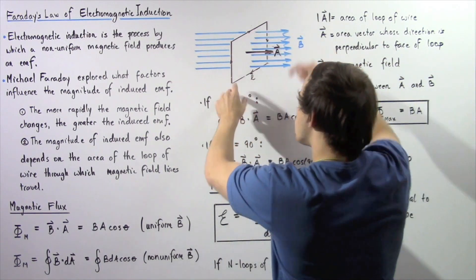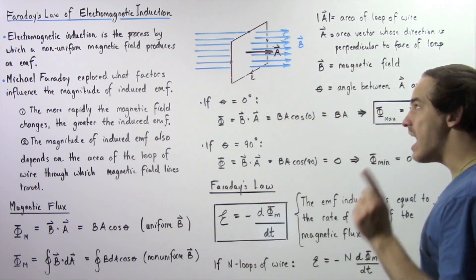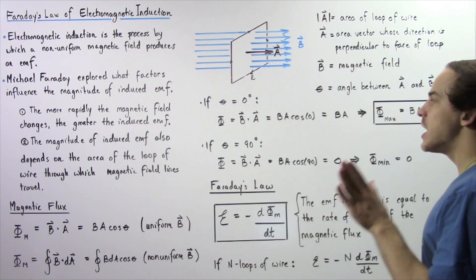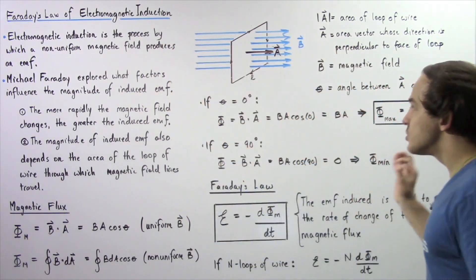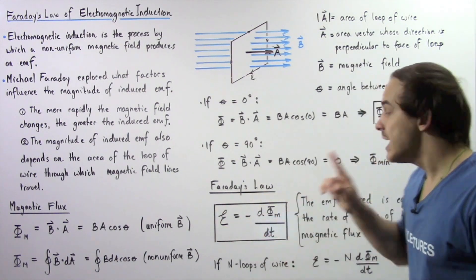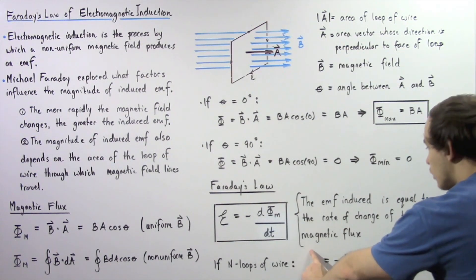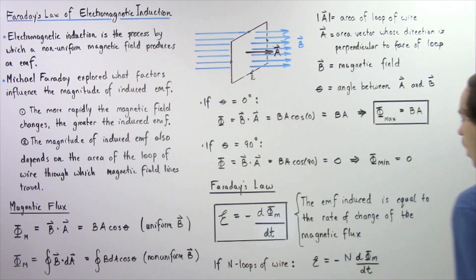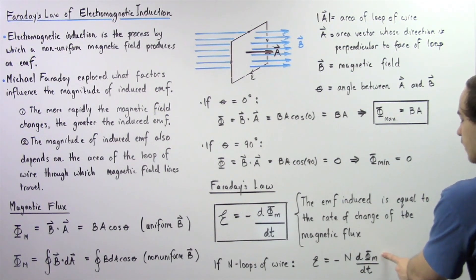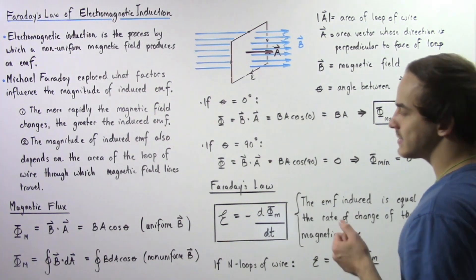Notice that so far we are dealing with only one loop of wire. If we take N loops of wire that all have the same exact area and stack them on top of one another, Faraday's Law becomes the following: the induced EMF is equal to the negative of the product of N — the number of loops of wire — multiplied by the rate of change of magnetic flux, given by d(magnetic flux) divided by dt, with respect to time.